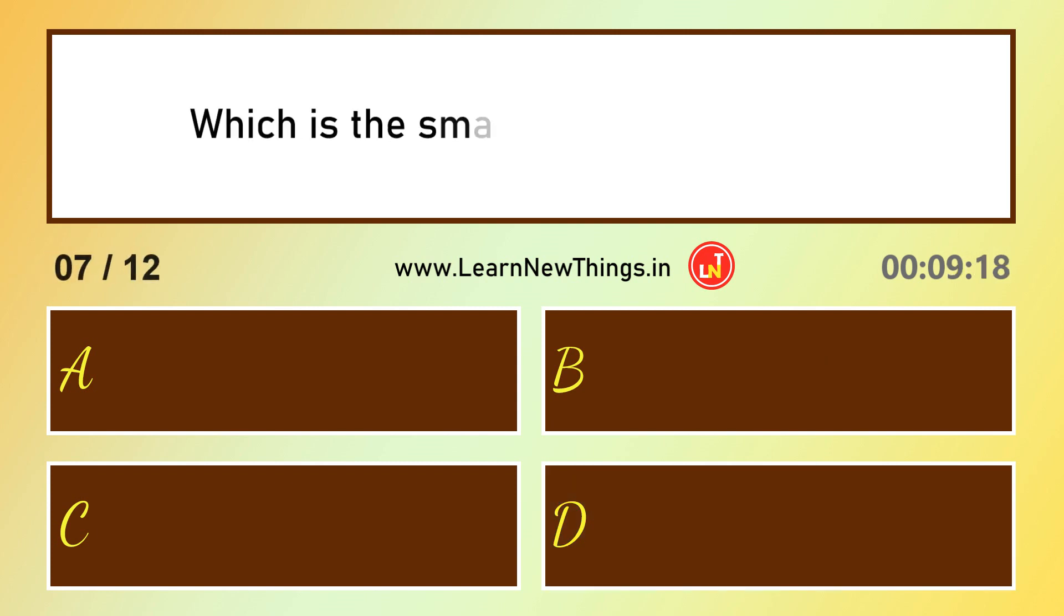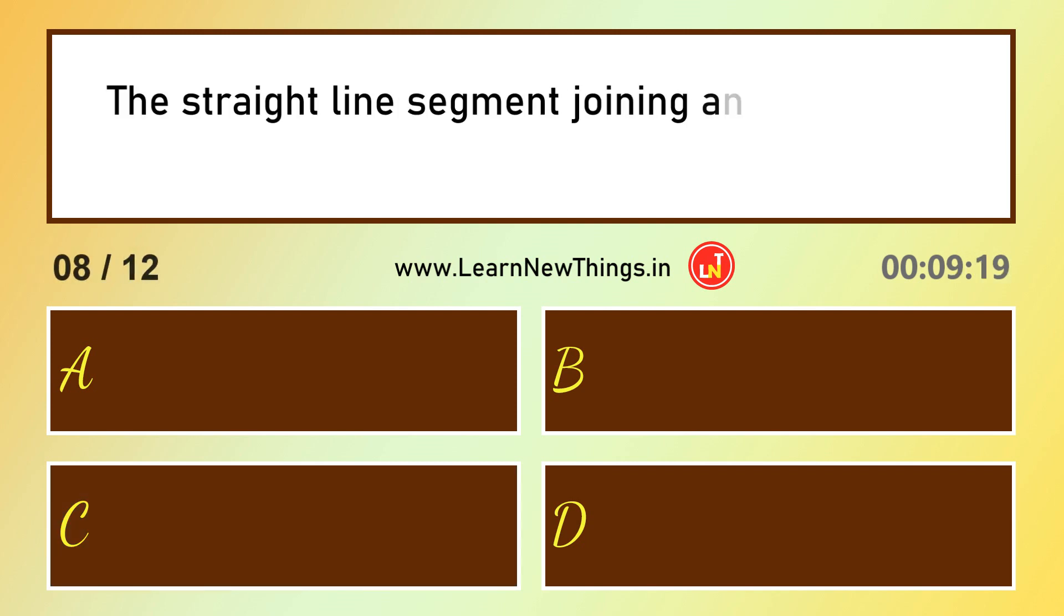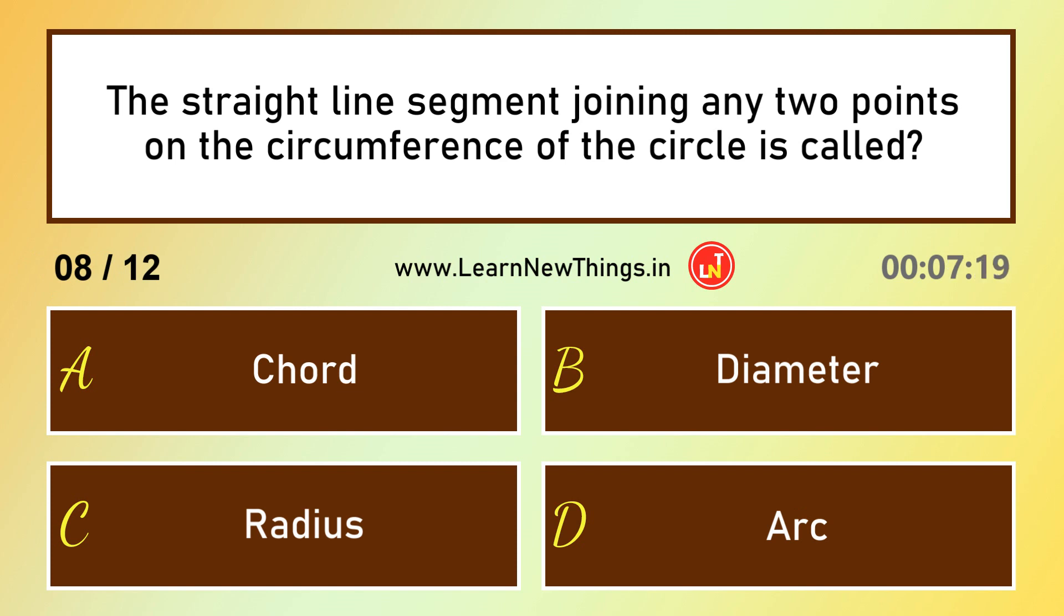Which is the smallest natural number? One. The straight line segment joining any two points on the circumference of the circle is called Chord.